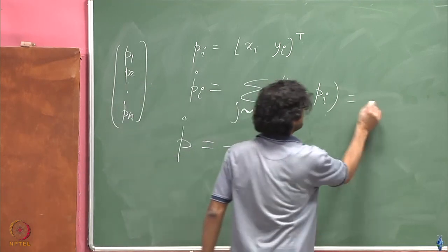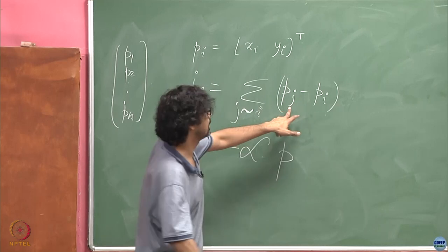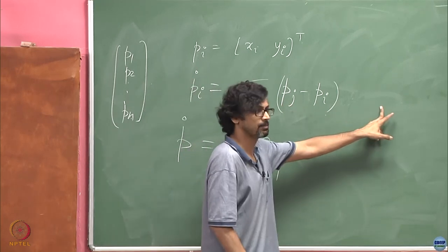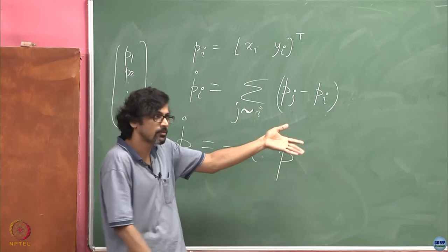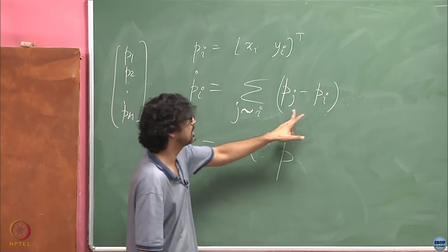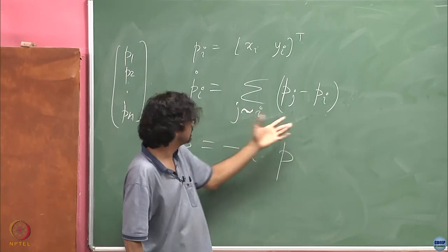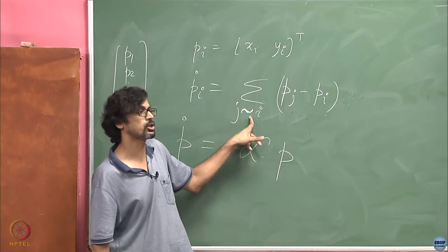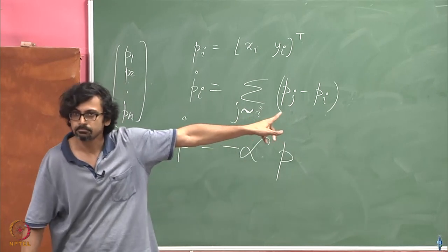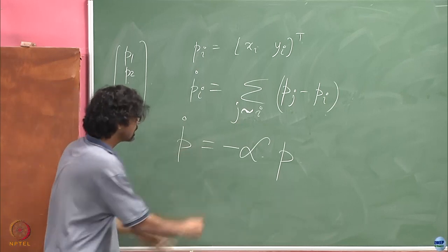If I stack this up, this is basically p_1 minus p_i plus p_2 minus p_i plus p_3 minus p_i, but not every one of them will appear. Suppose p_3 is not connected to p_i, then that will not appear here because there is this restriction, only if j is a neighbor of i will this appear. So this is exactly this.